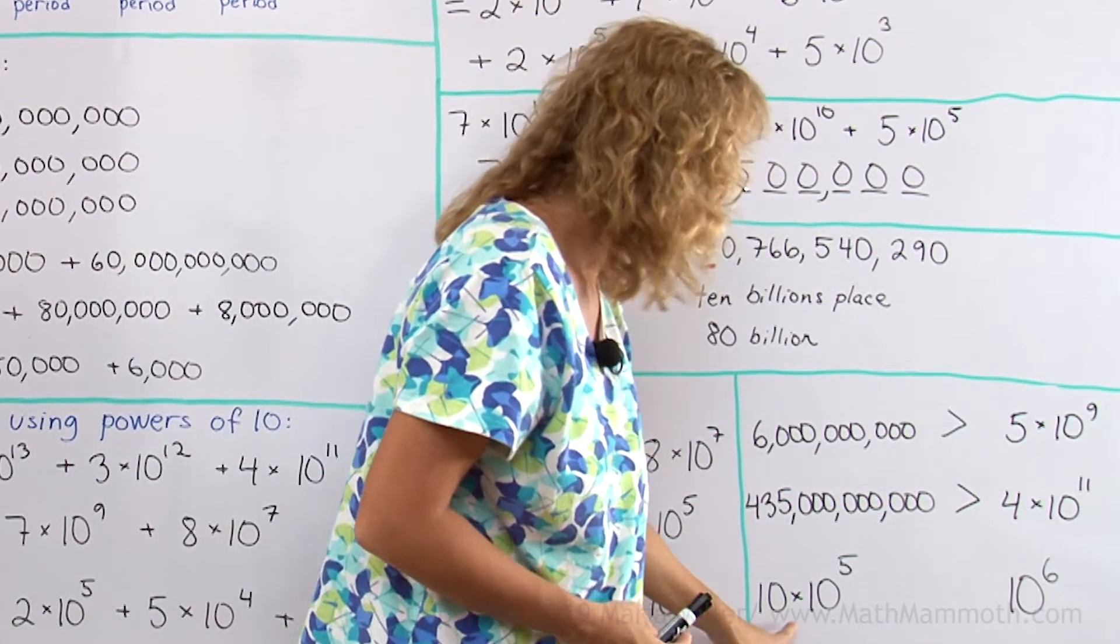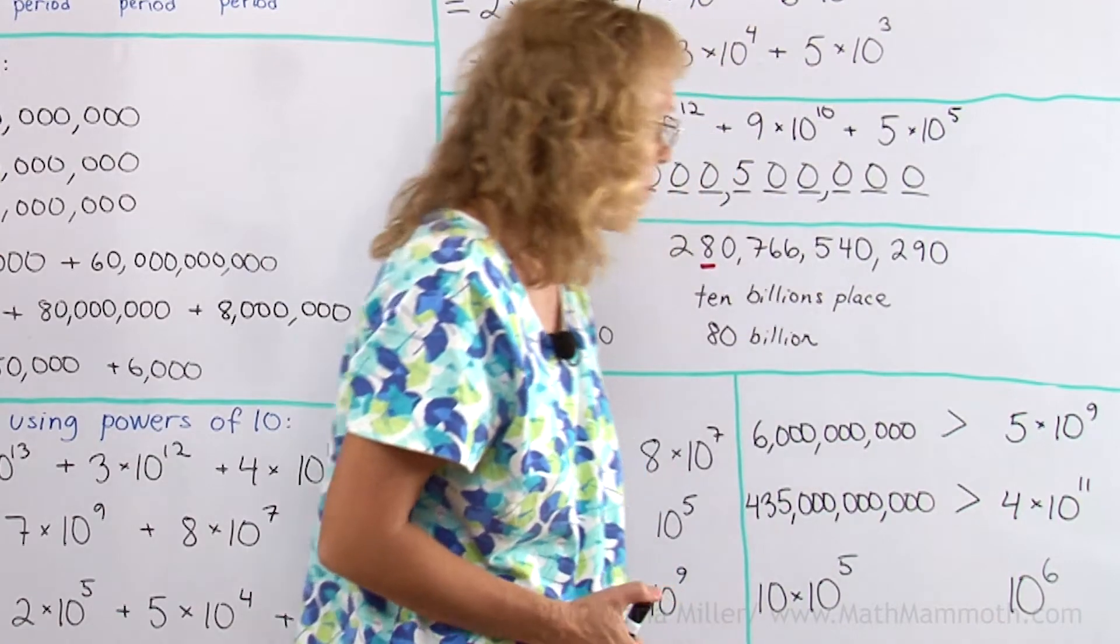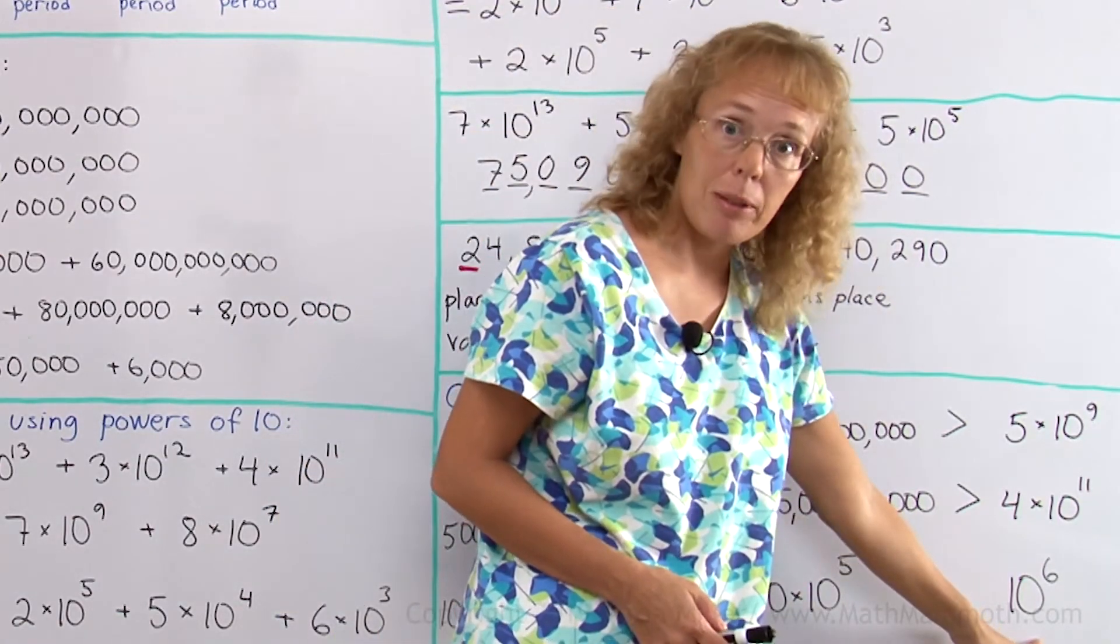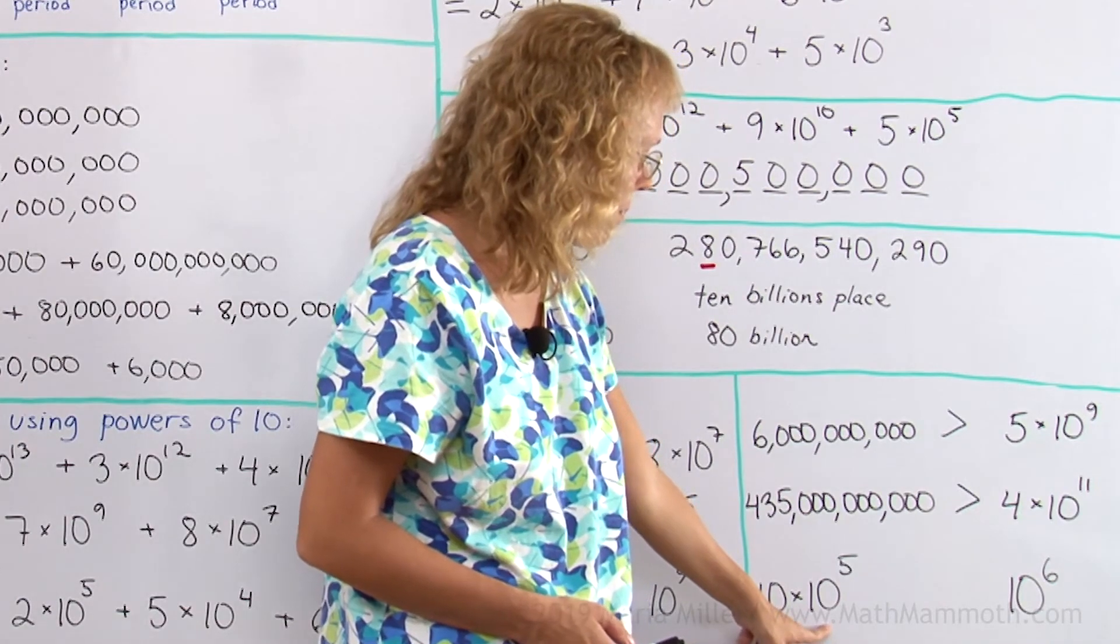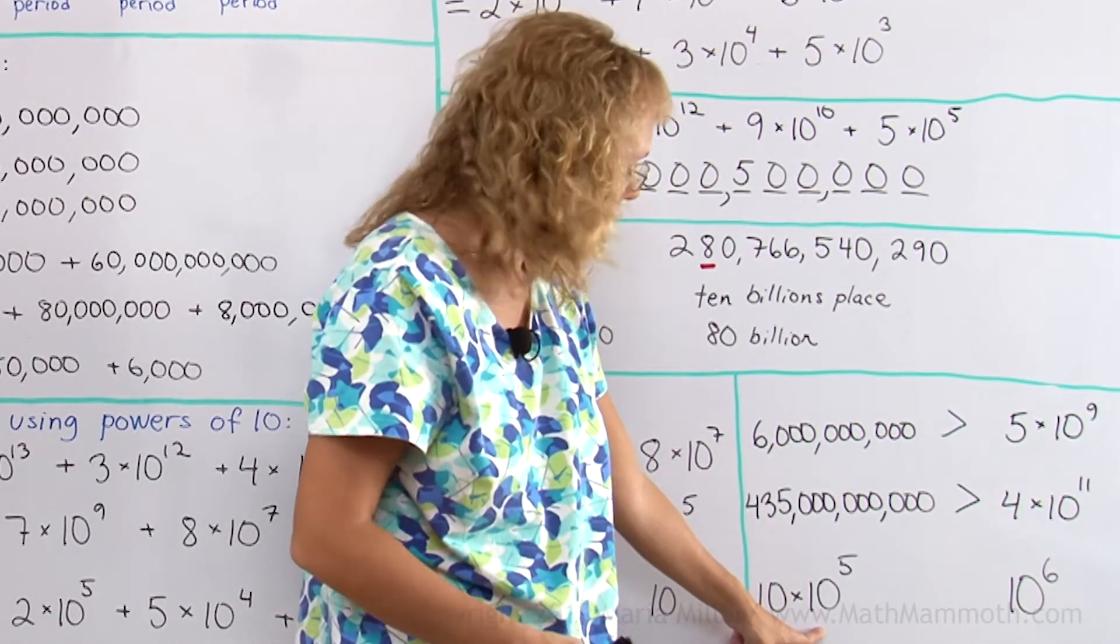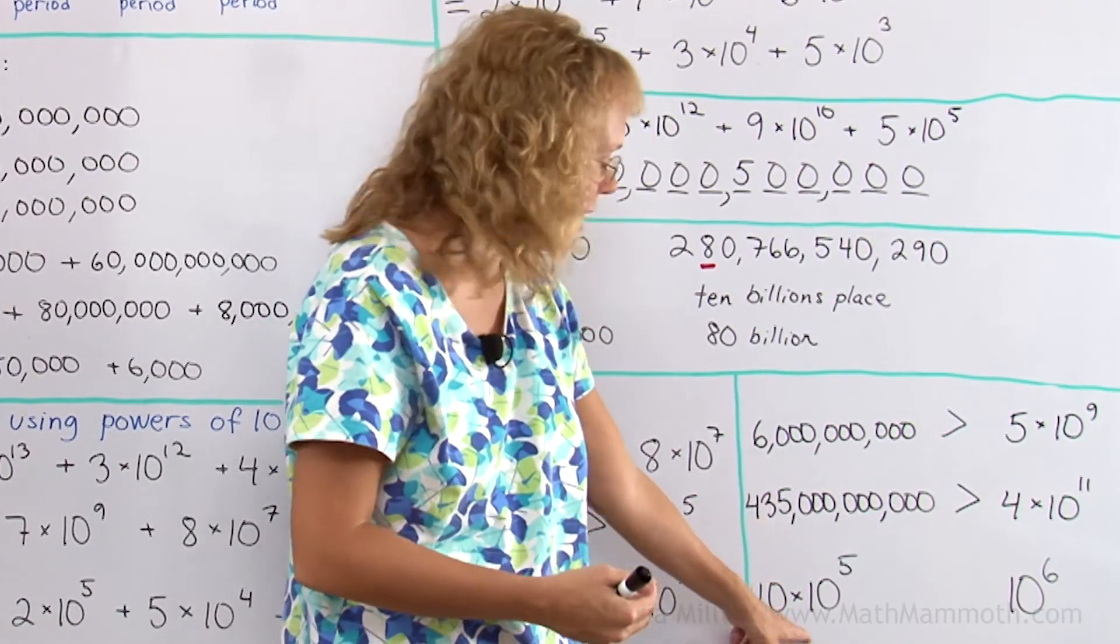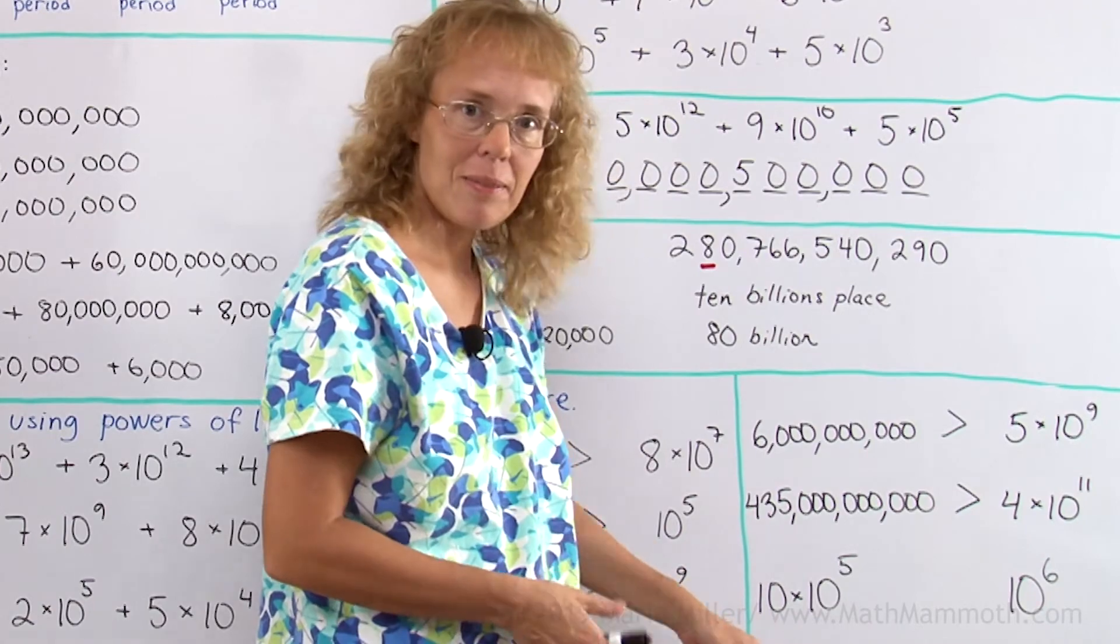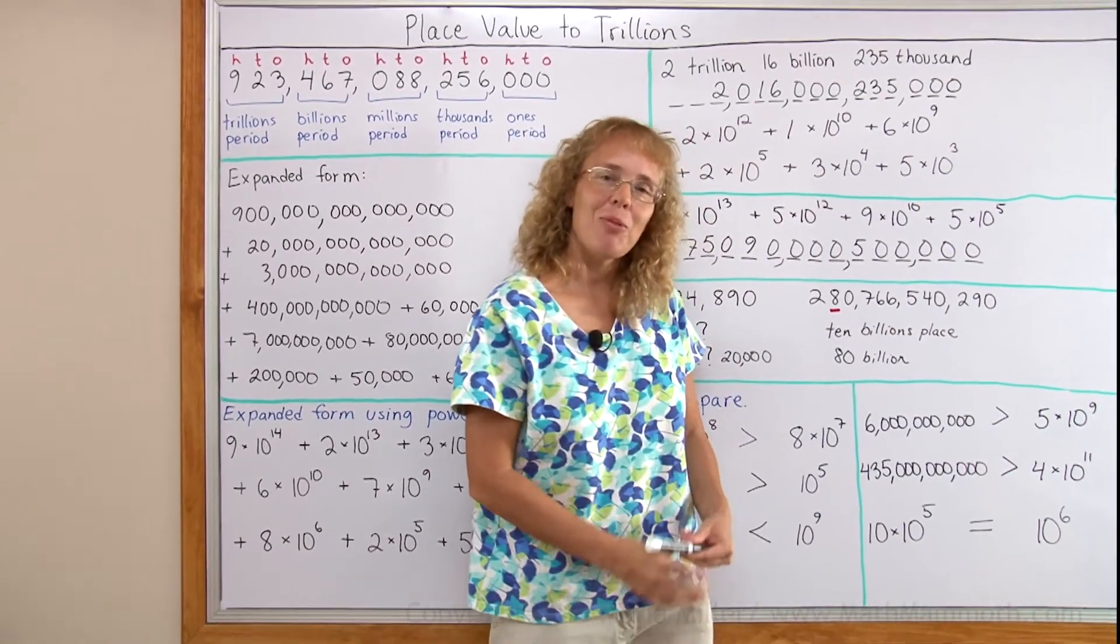And over here, 10 times 10 to the 5th versus 10 to the 6th. This one is exactly 1 million. This here, 10 to the 5th—well, it is 1 followed by 5 zeros. When you multiply that by 10, you add a zero to it. So this actually becomes 10 to the 6th. They are equal. Okay, well done. I hope this was helpful. Thank you.